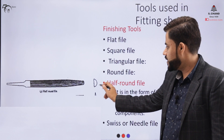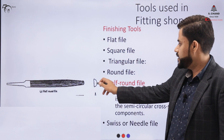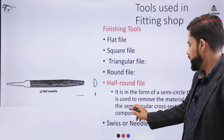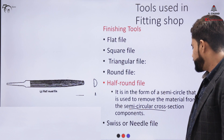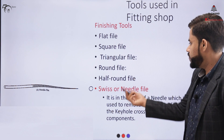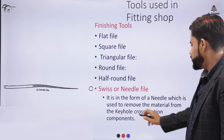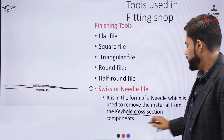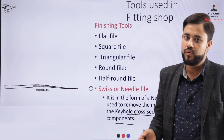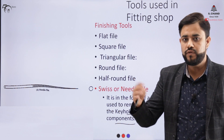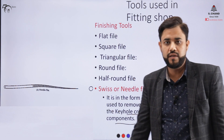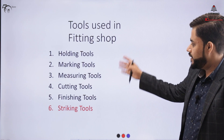For the half-round file, the cross-sectional surface is semi-circular, as shown in the diagram, and it is used to remove material from semi-circular cross-section components. Lastly, the needle file is in the form of a needle and is used to remove material from keyhole cross-sections. There are certain components made with a keyhole shape, and to remove material from their surface we use this Swiss file or needle file.